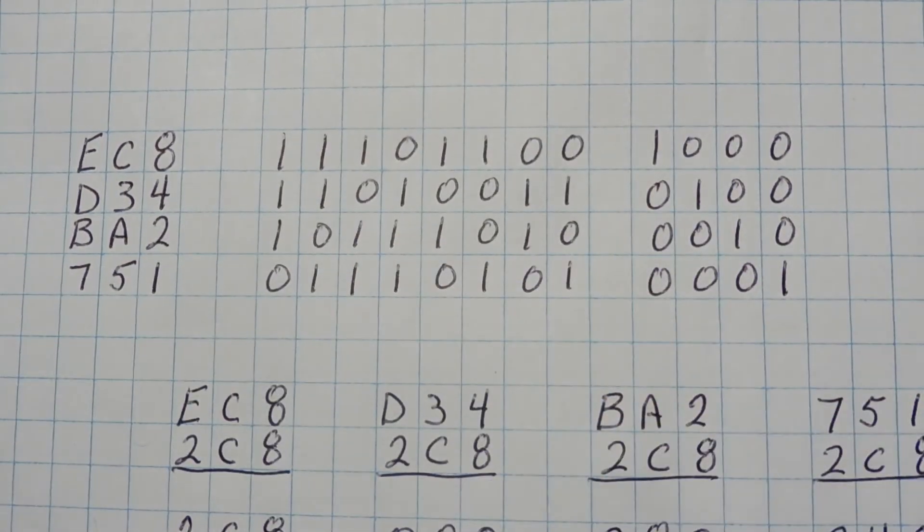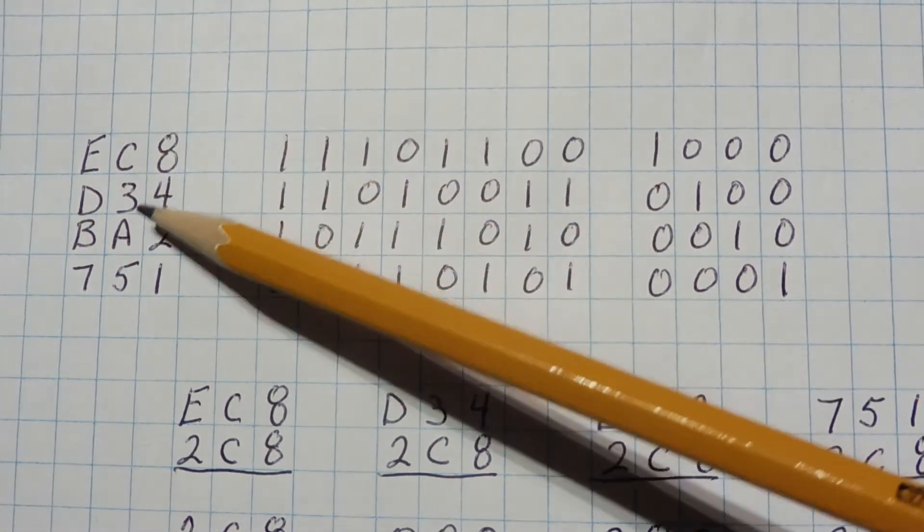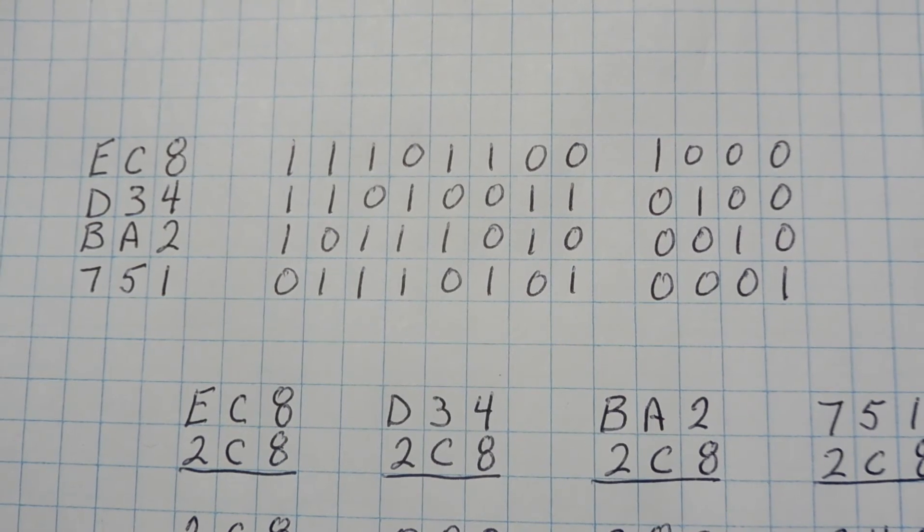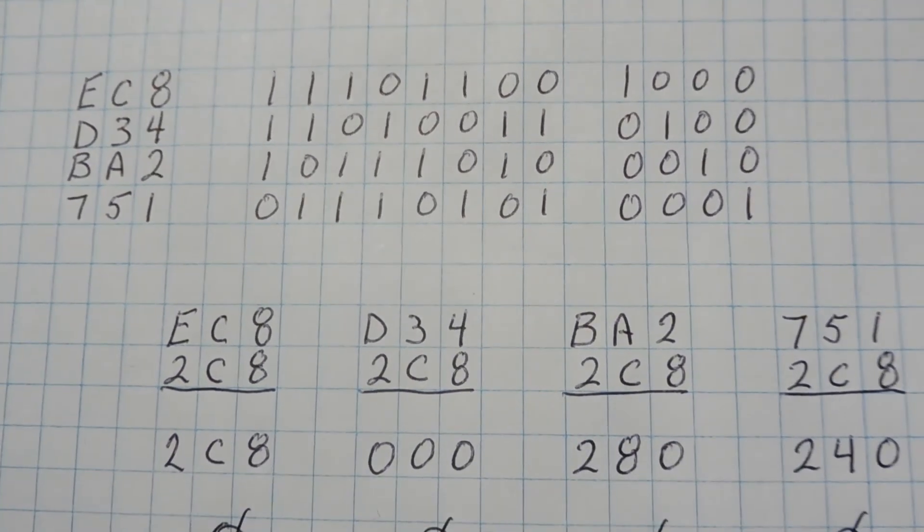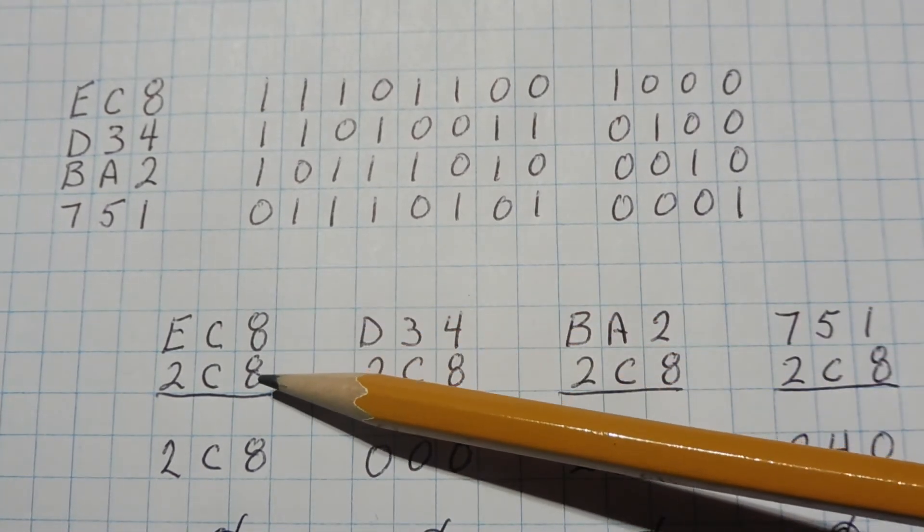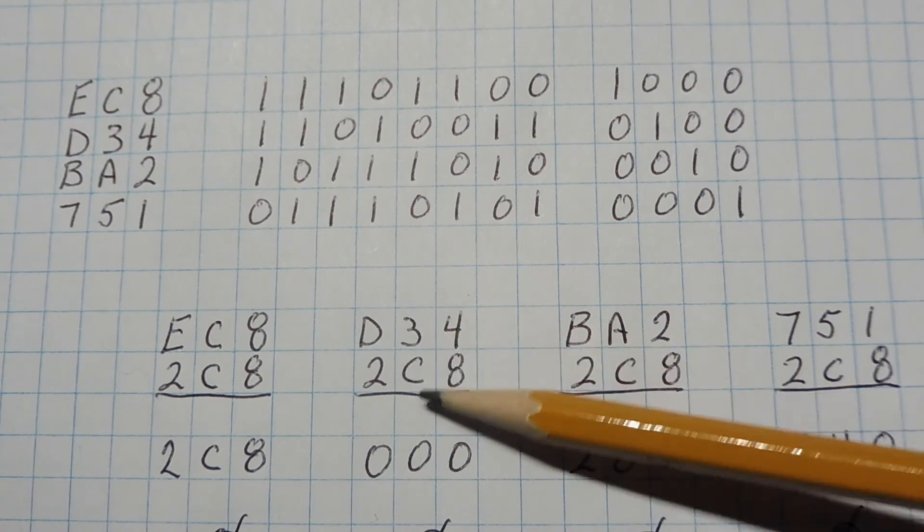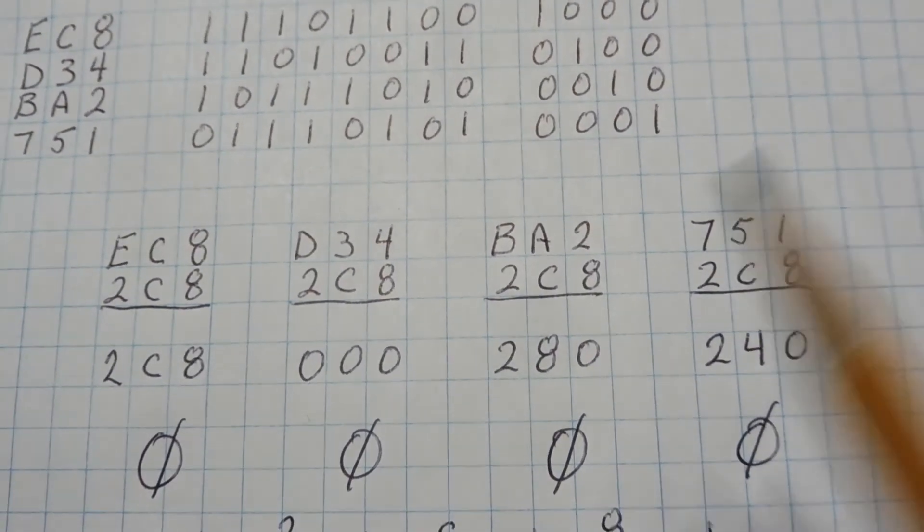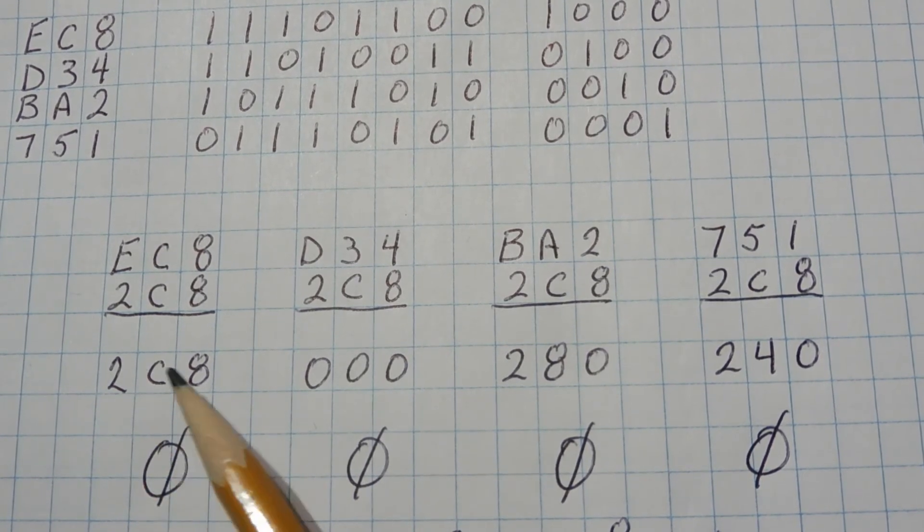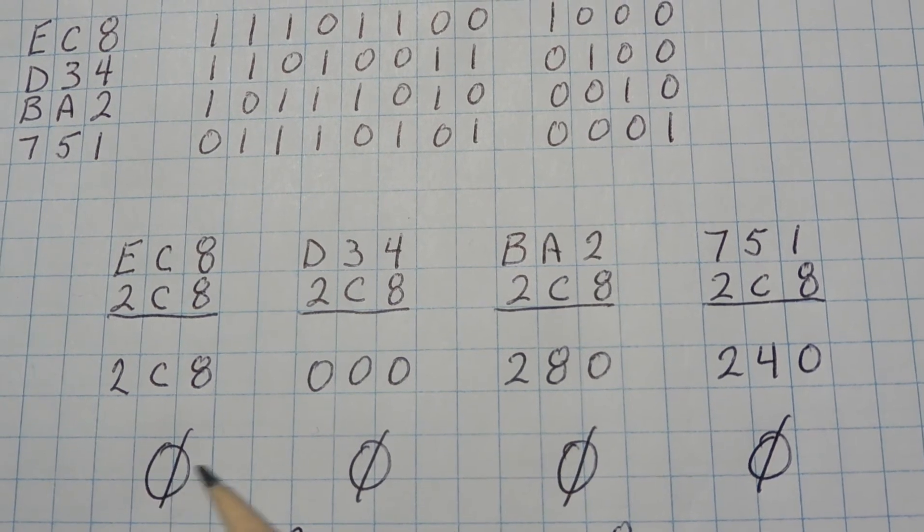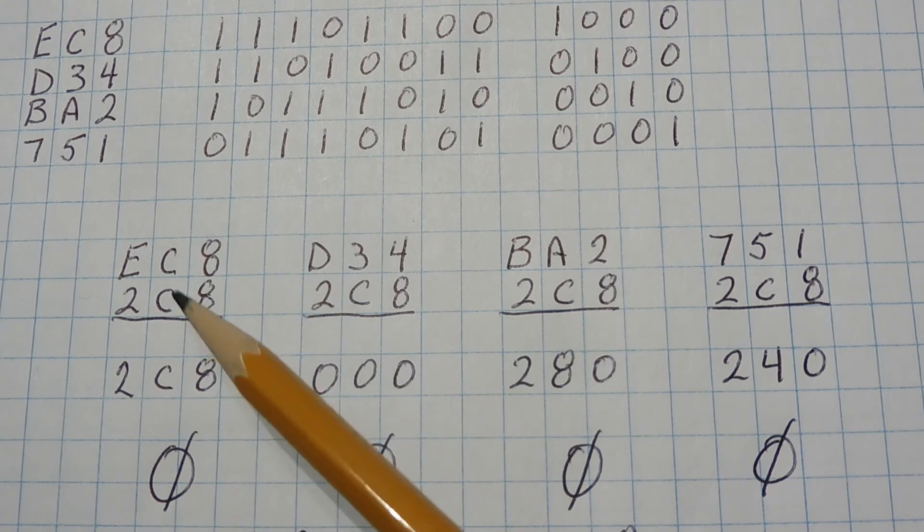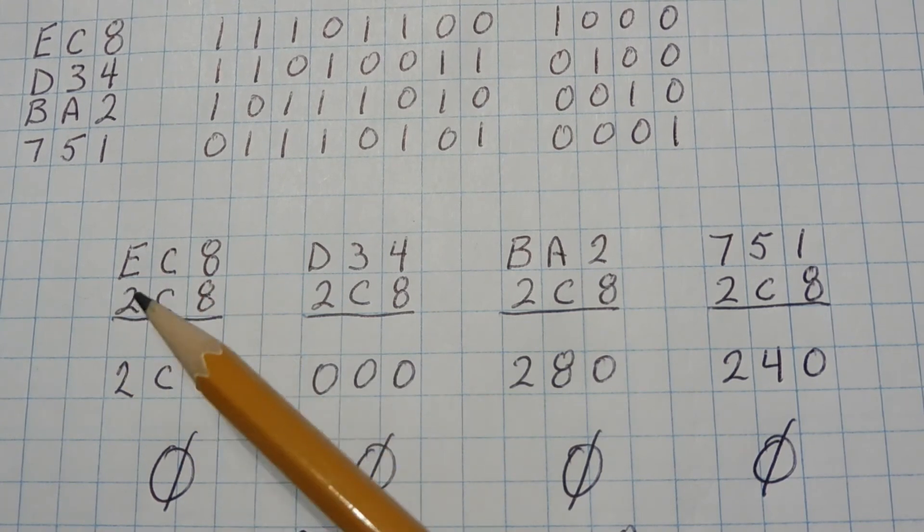So now our Hamming code matrix is EC8, D34, BA2, 751. So now we take our code that we received, 2c8. And we and it with a decode Hamming matrix. So we see EC8 and it with 2c8. We get a value. And we do all 4 like we did before. And then we look at the parodies. We see how many ones there are in the values into the answers that we got. And if they're all even, all zeros, then there's no errors. Then we could say the 2c8 is correct. So the data 2c is what we're going to use is correct.